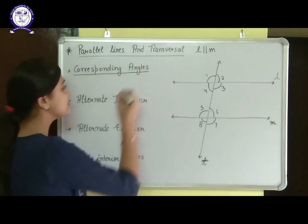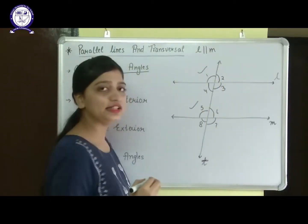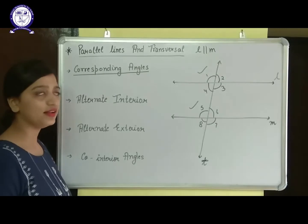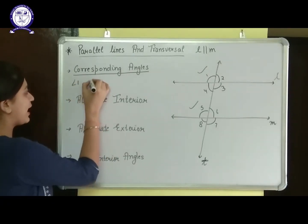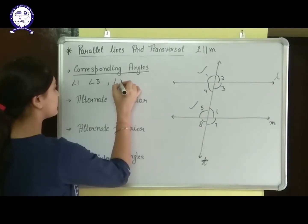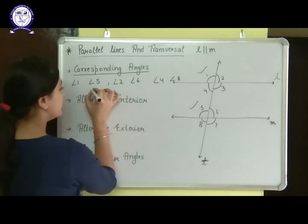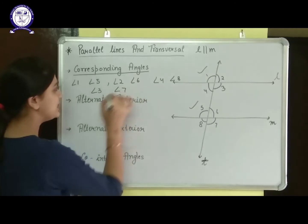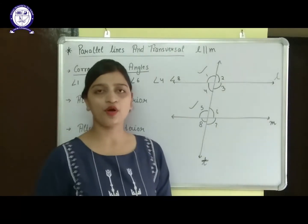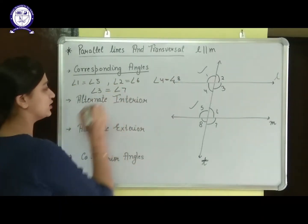What are corresponding angles? Angle 1 and angle 5 are corresponding angles — they are on the same side of the transversal and the same side of the two parallel lines. Similarly, 2 and 6, 4 and 8, and 3 and 7. These are the four pairs of corresponding angles, and the property is that corresponding angles are always equal to each other.